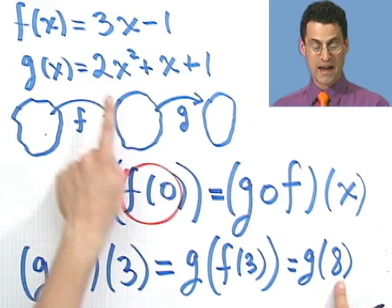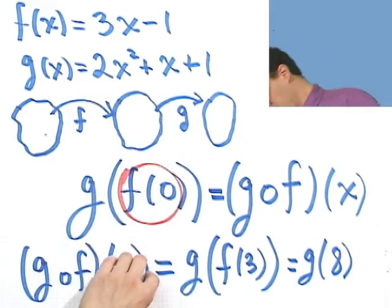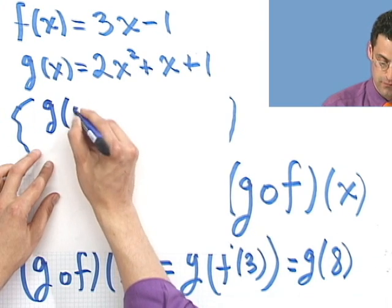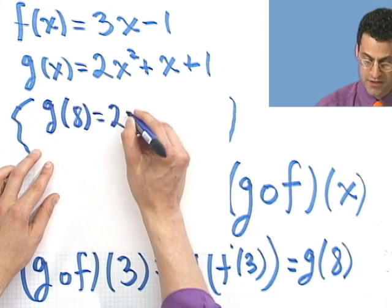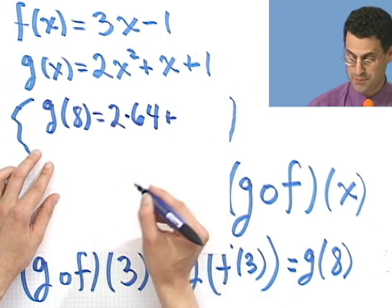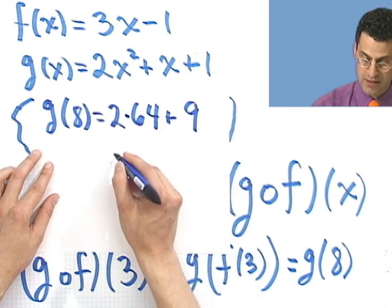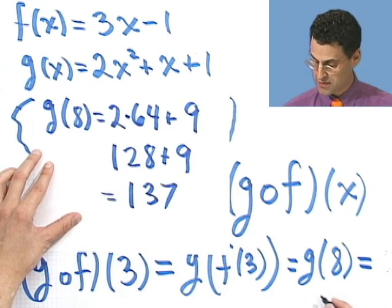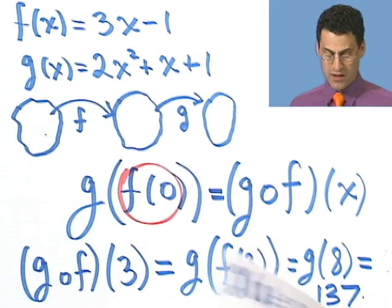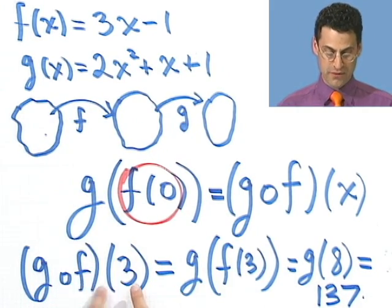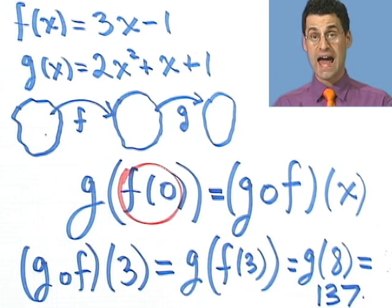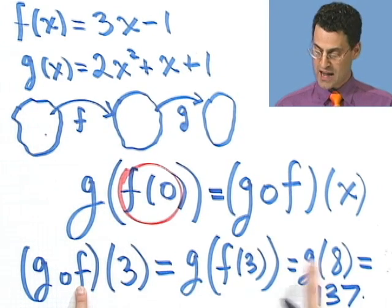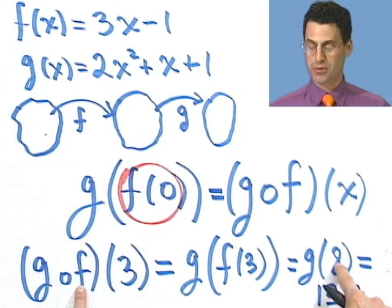And so now what I have to do is go back to the g function and find out what g of 8 is. Well, what's g of 8? Let's see if we can do that really fast. So g of 8 would equal 2 times 8 squared, which is 64, plus 8 plus 1, which is 9. So here we'd have 128 plus 9, which equals 137. So this answer would be 137. So what is g composed with f of 3? It would equal 137. And how did I get it? I first took the 3 and used it as input into the f function. I got that answer and then took the answer and used it as input into the g function.